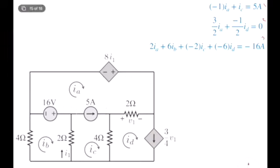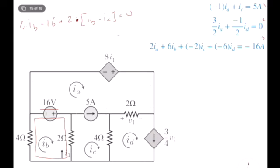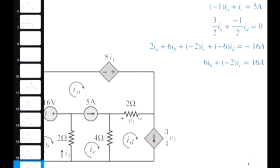We need one more equation associated with the iB mesh. Starting from a node and traversing the loop: 4·iB, then a voltage increase so minus 16, plus 2·(iB − iC) equals zero. Grouping the iB and iC terms gives 6iB − 2iC = 16A.